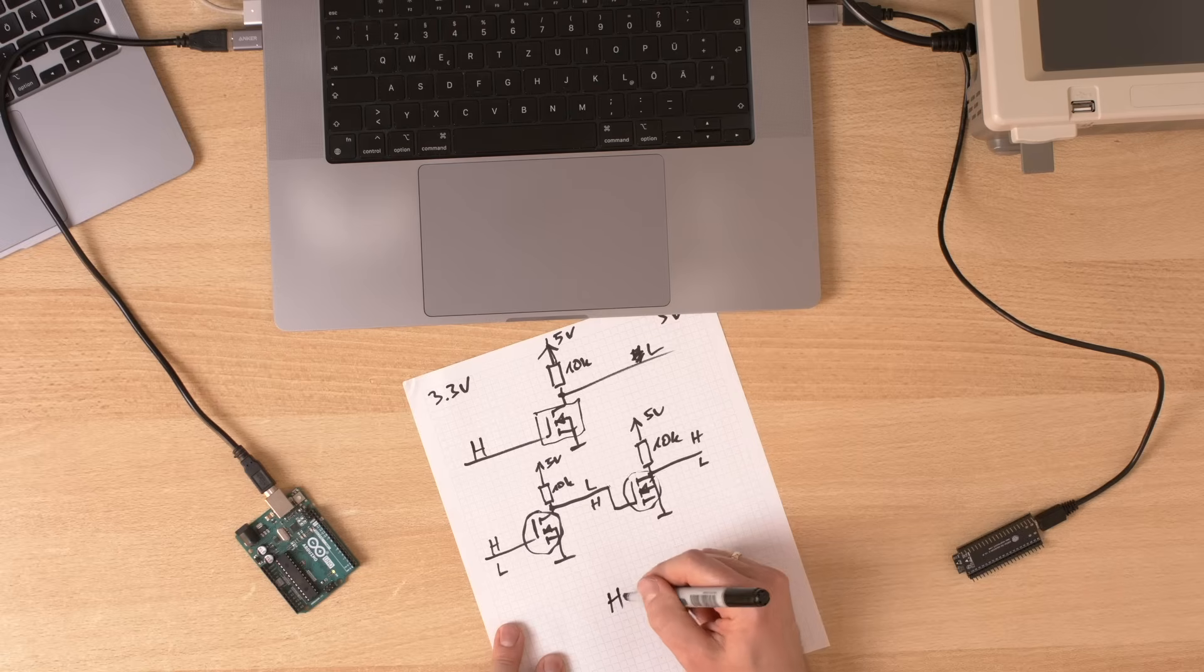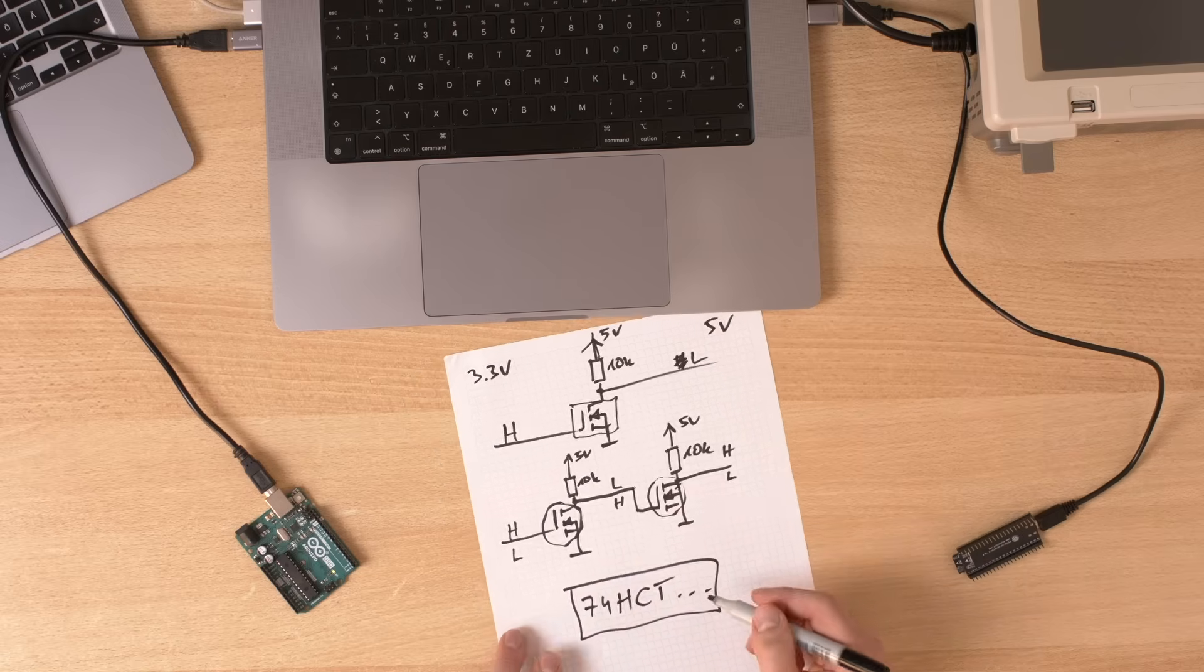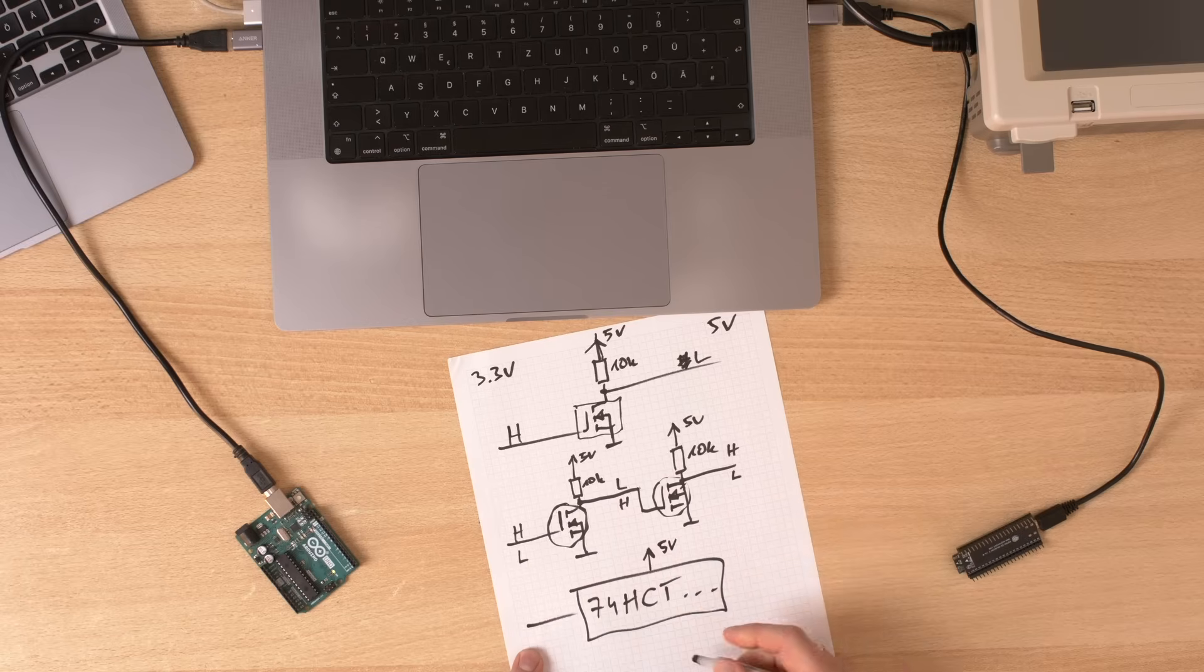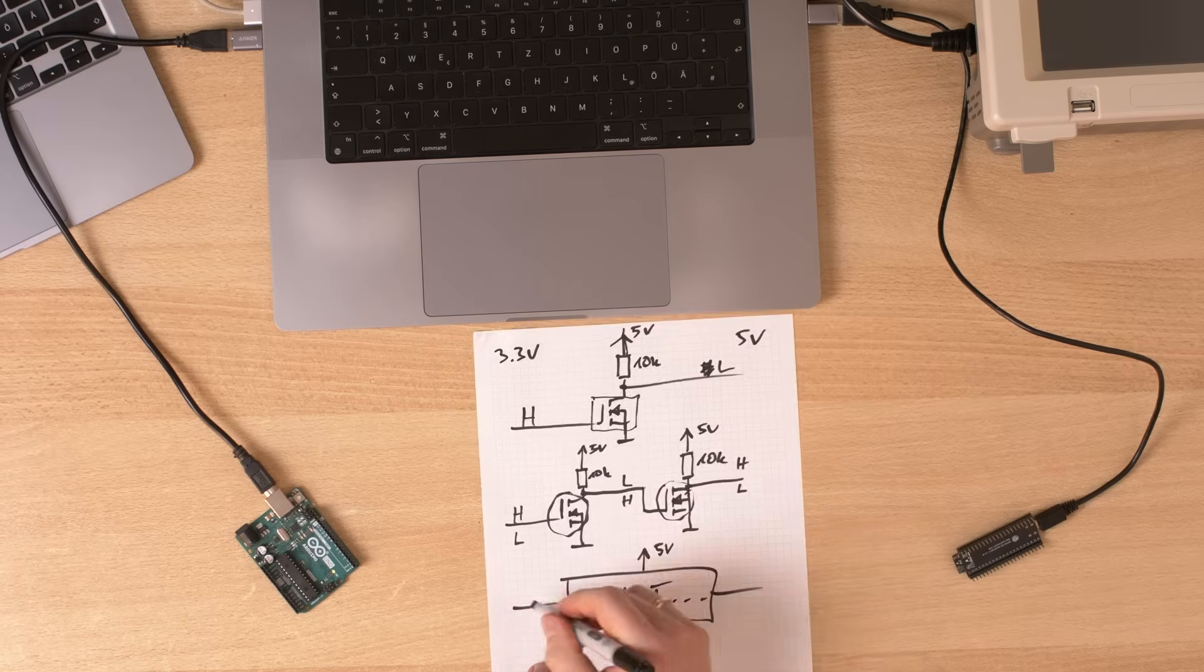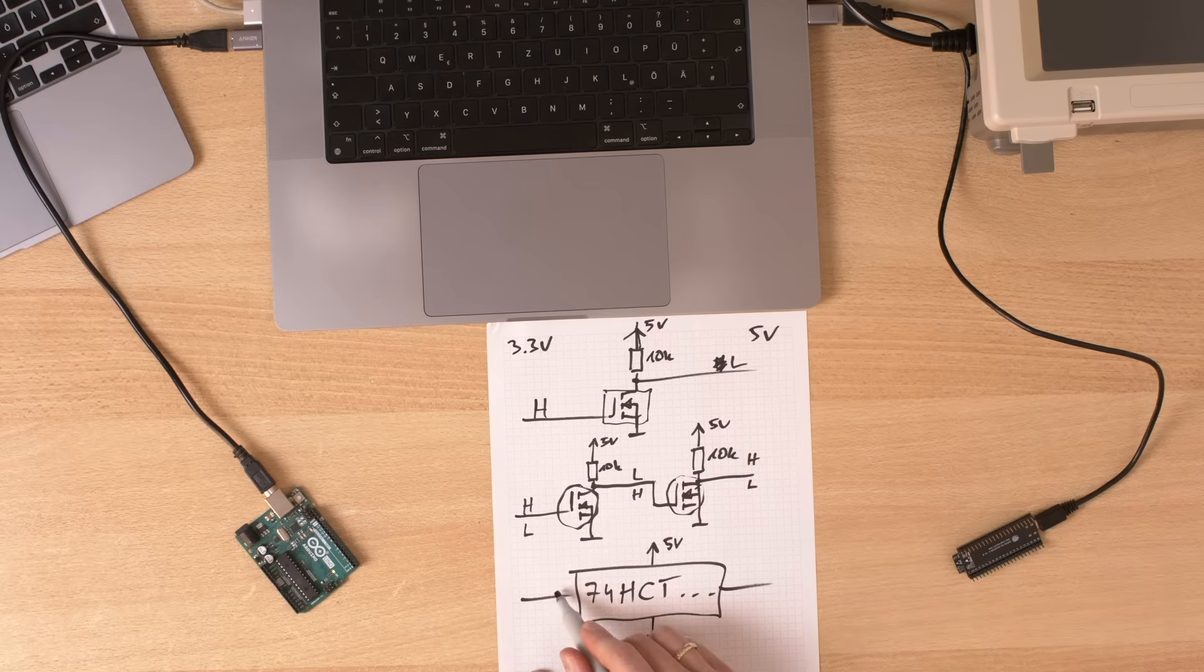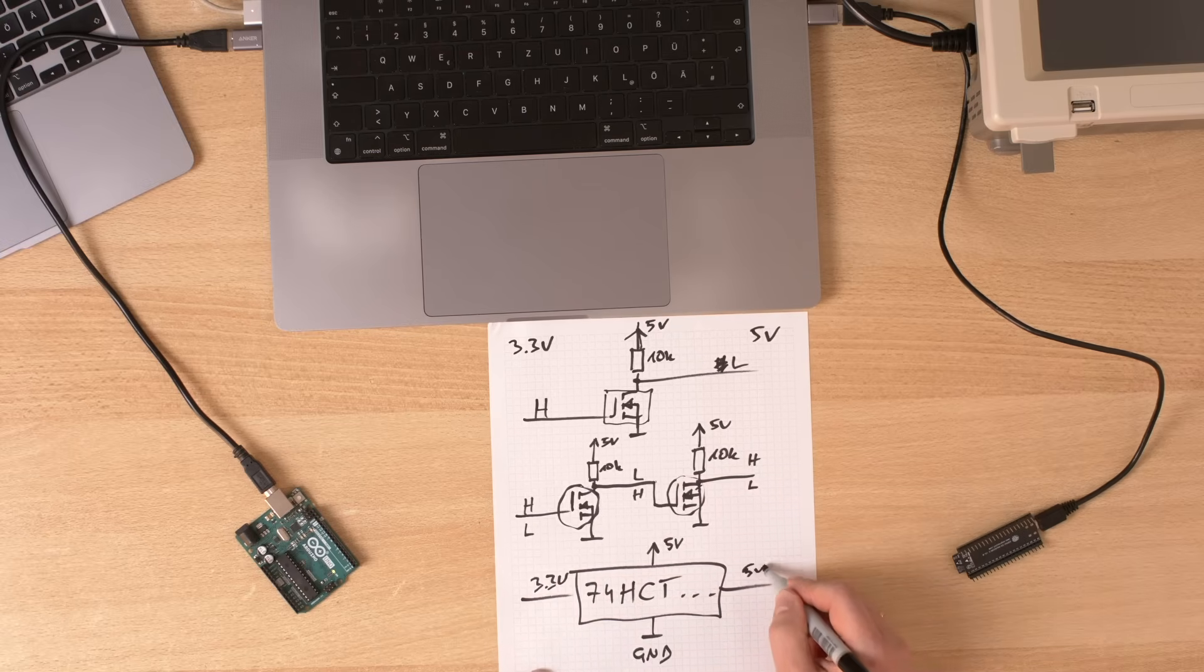Another way of doing it is to use a buffer like in the previous example, but this time not an AHC, but a 74HCT, so 74HCT blah, blah, blah. This is what you look for because you can supply it by 5 volts and ground and it will just convert 3.3 volts signals into 5 volts signals.